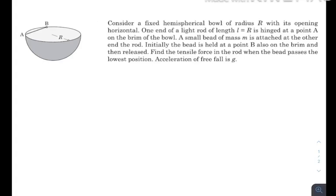There is a rod of length L where point A is hinged and at point B there is a bead. Both points are situated on the brim of the hemisphere at the opening of the hemisphere. The bead B is released and it falls on the inner surface inside the hemisphere.